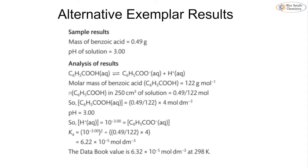We have a specific mass of benzoic acid, 0.49 g, and that tells us that it has a pH of 3.00. The molar mass of benzoic acid, C₆H₅COOH, is 122 g mol⁻¹, so we can then work out the number of moles. That is the number of moles in 250 cm³ of solution. To work out the concentration of our acid, we need to convert it up into dm³. So 250 is going to be equal to 0.49/122 times 4 mol dm⁻³.